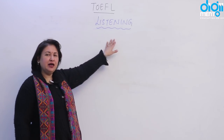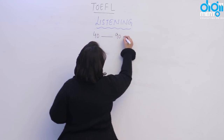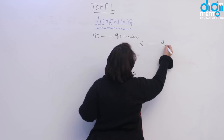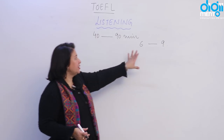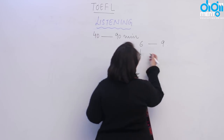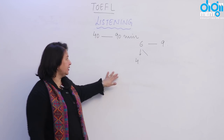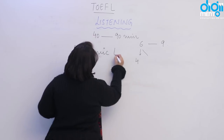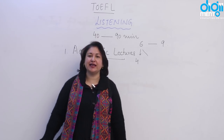The next section is Listening. As mentioned earlier, it can be 40 to 90 minutes depending on the length and number of passages. You can get six to nine passages in total. If you have six passages, approximately four could be one type and the remaining two another type. There are two types of listening passages: academic lectures and conversations.